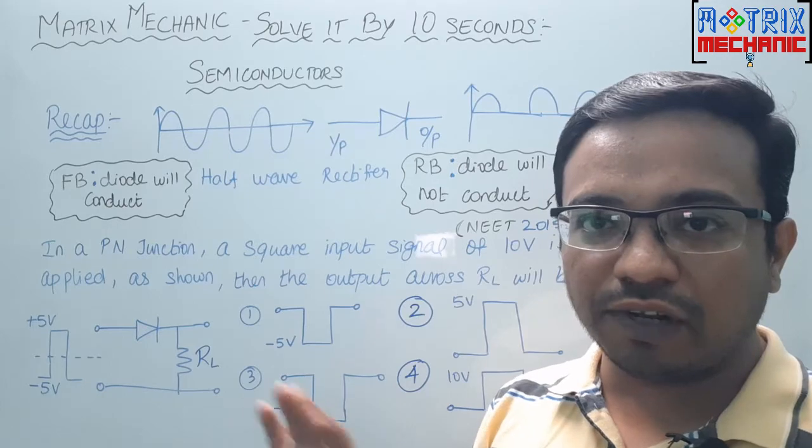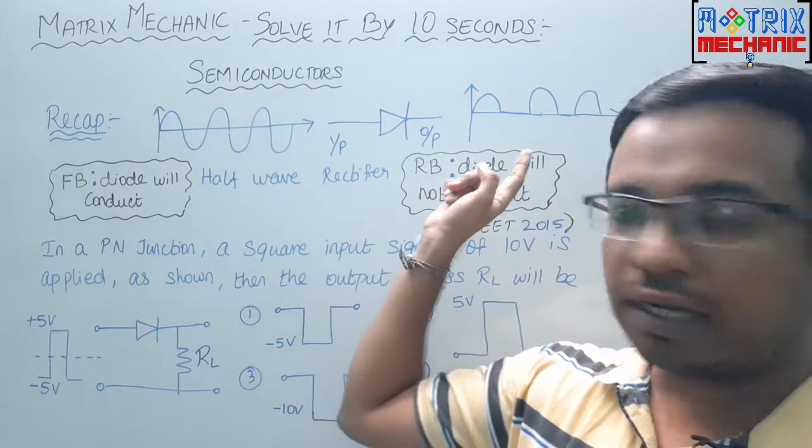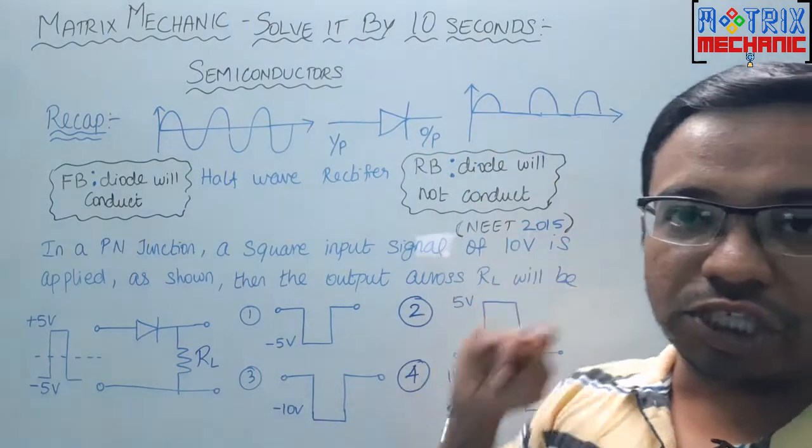In reverse bias, the diode will not conduct. So this part will not conduct. The output of this will have zero.